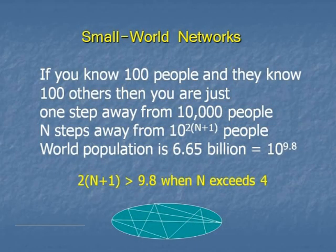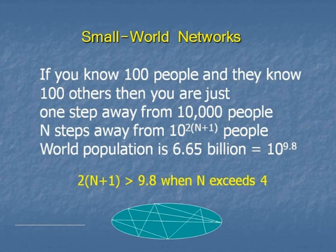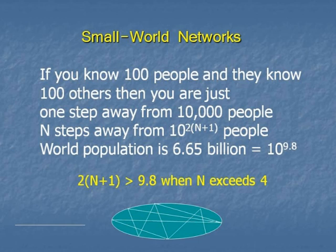Suppose we assume that each of us knows 100 people, just to pick a round number, and that each of those people knows another 100 people. What we're neglecting here is all the overlaps between those friends, but you can account for that with a little more mathematics. If we take N steps away — the first step being your friends, then friends of friends, and so on — you're linked to 10 to the power 2N+2 people. The world population is 6.65 billion, which is 10 to the power 9.8. So 10^(2N+2) exceeds the world population when 2N+2 is greater than 9.8 — meaning when N exceeds 4. So just 4 steps away, under this model, you have more acquaintances than the entire world population.